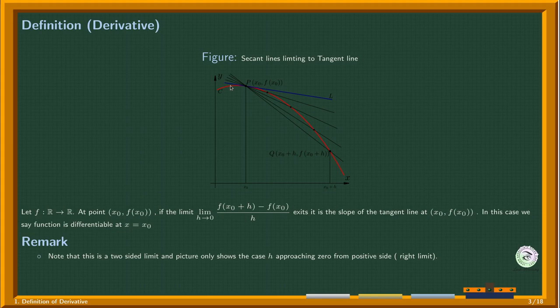So the secant lines must converge to the tangent line from both sides.